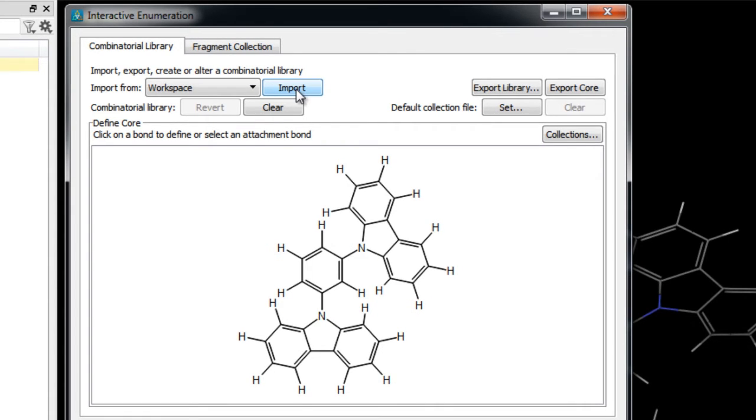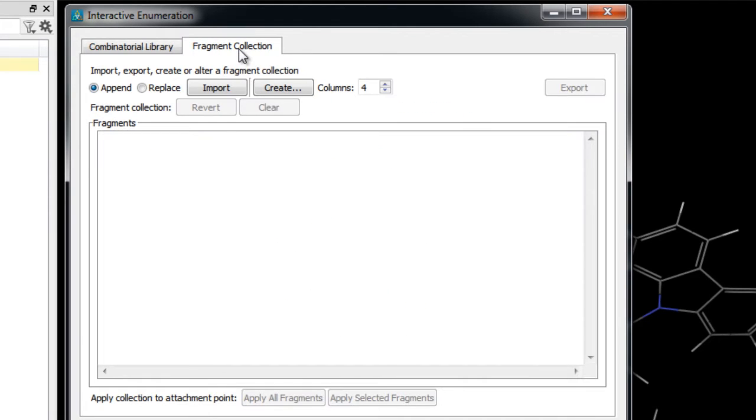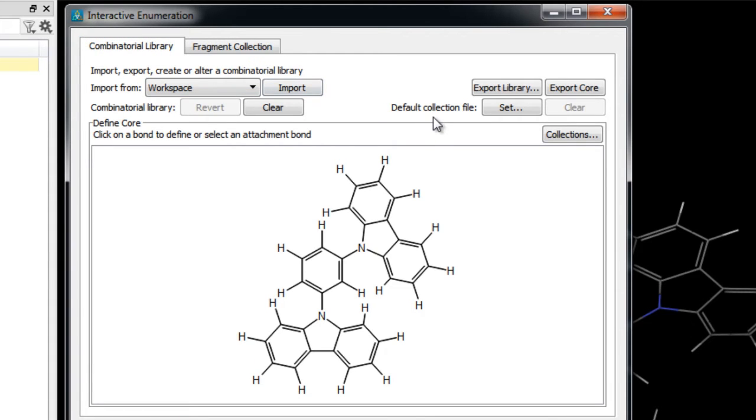Next, in order to build the library one can either use a pre-built fragment collection file or one can build a fragment collection from scratch over in the fragment collection tab. For now we will use a pre-built file containing fragments commonly found in the chemical space of OLED materials, and toward the end of this video we will return here to describe how to build a fragment collection library from scratch.